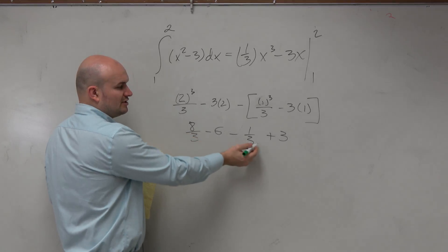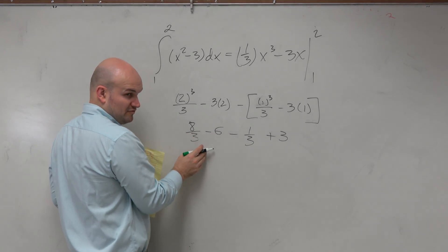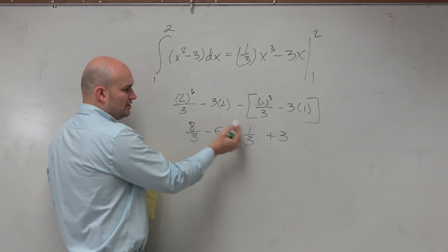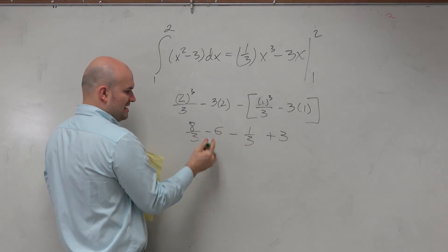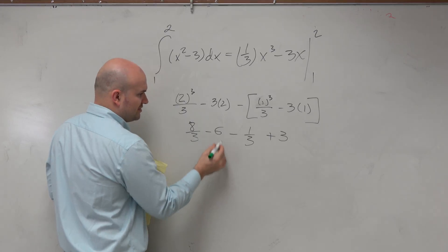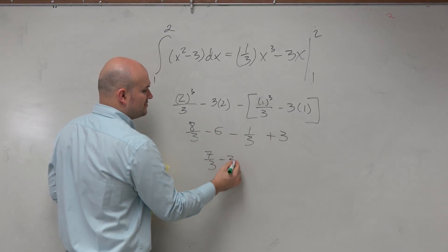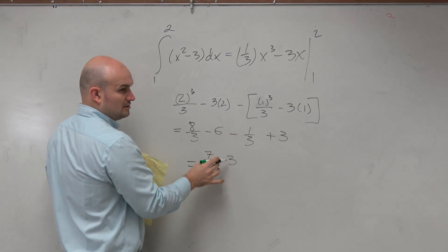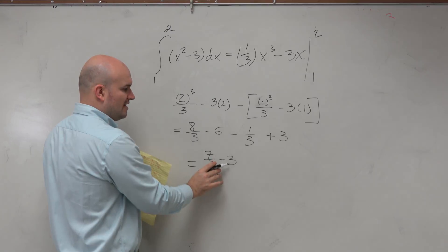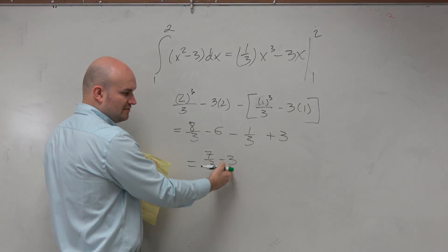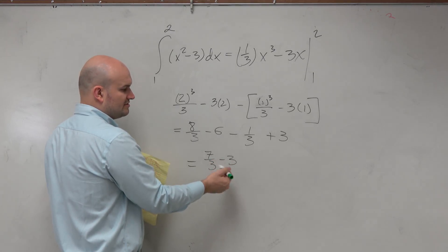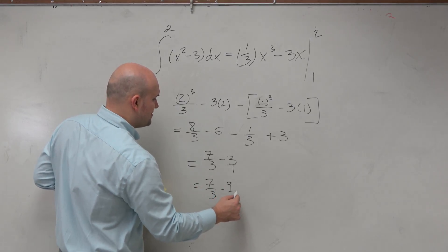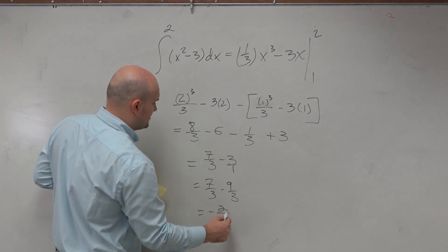There are a couple ways you could do this. You could convert everything to have denominators of 3 and subtract, or you could use the associative property and combine: 8/3 minus 1/3 gives 7 thirds, and negative 6 plus 3 gives minus 3. Rewriting minus 3 as 9 thirds, that gives us 7 thirds minus 9 thirds, which equals negative 2 thirds.